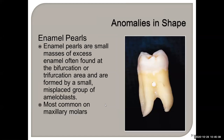Enamel pearls are small masses of excess enamel often found in the bifurcation or trifurcation. They are most common on the maxillary molars. You cannot have periodontal ligament attachment around an enamel pearl — no.